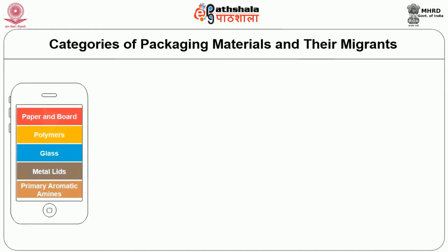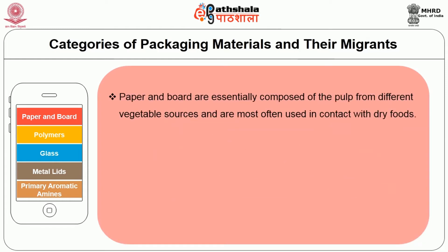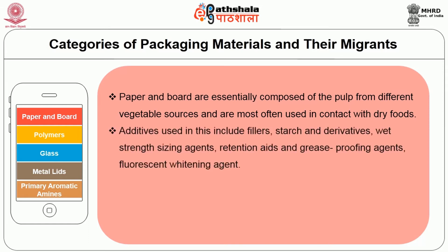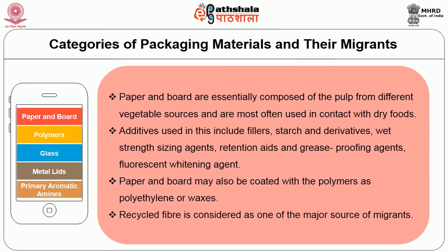First we will discuss about paper and paperboard. Paper and paperboard are essentially composed of pulp from different vegetable sources and are most often used in contact with dry foods. Additives used include fillers, starch and derivatives, wet strength sizing agents, retention aids and grease-proofing agents, and fluorescent whitening agents. Paper and board may also be coated with polymers such as polythene and waxes. Recycled fiber is considered as one of the major sources of migrants.